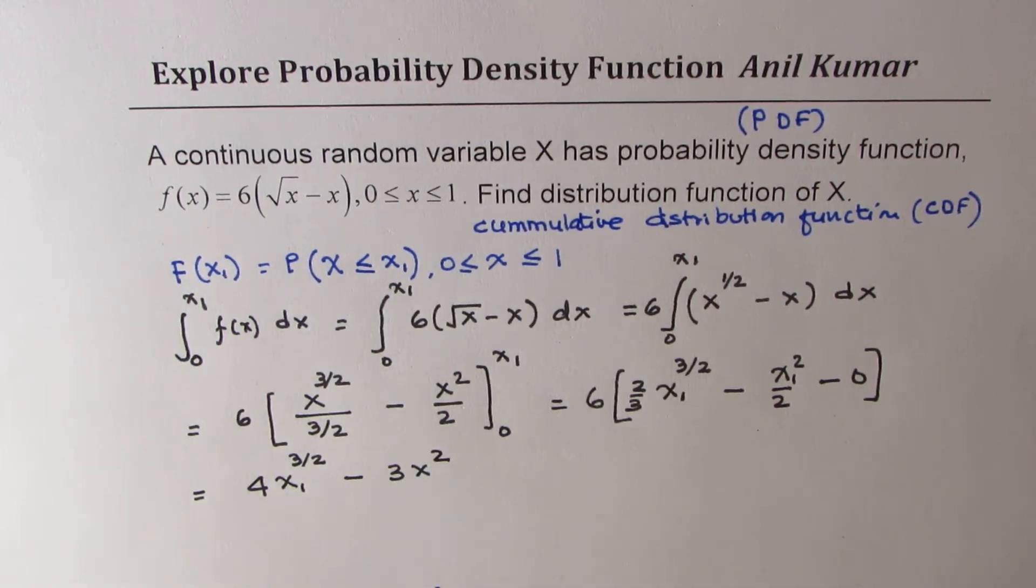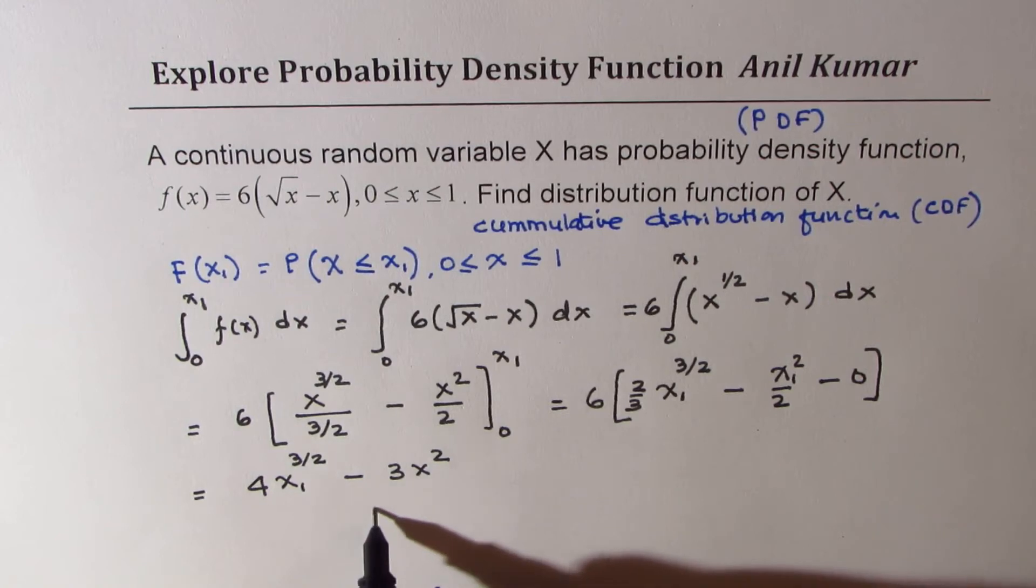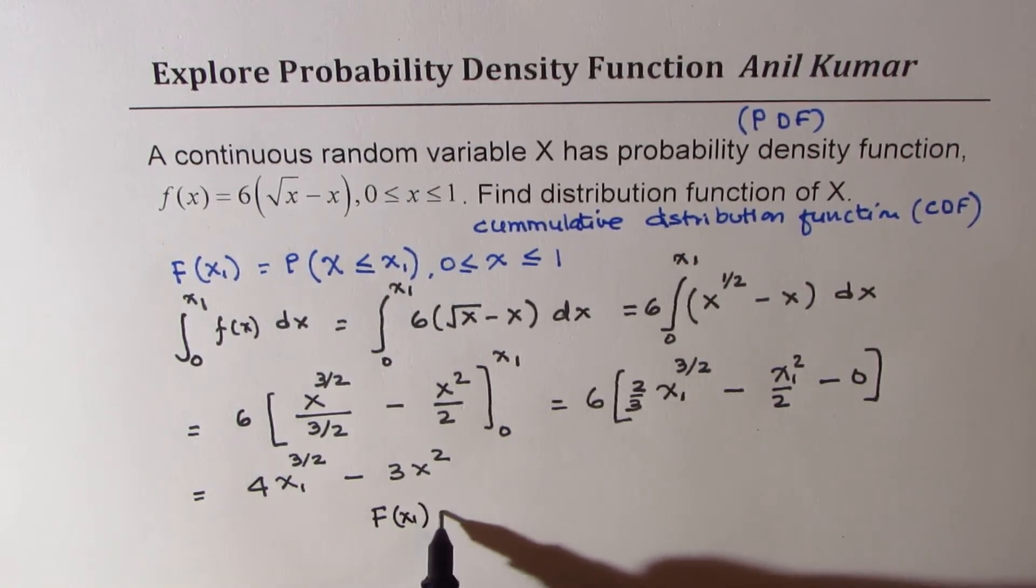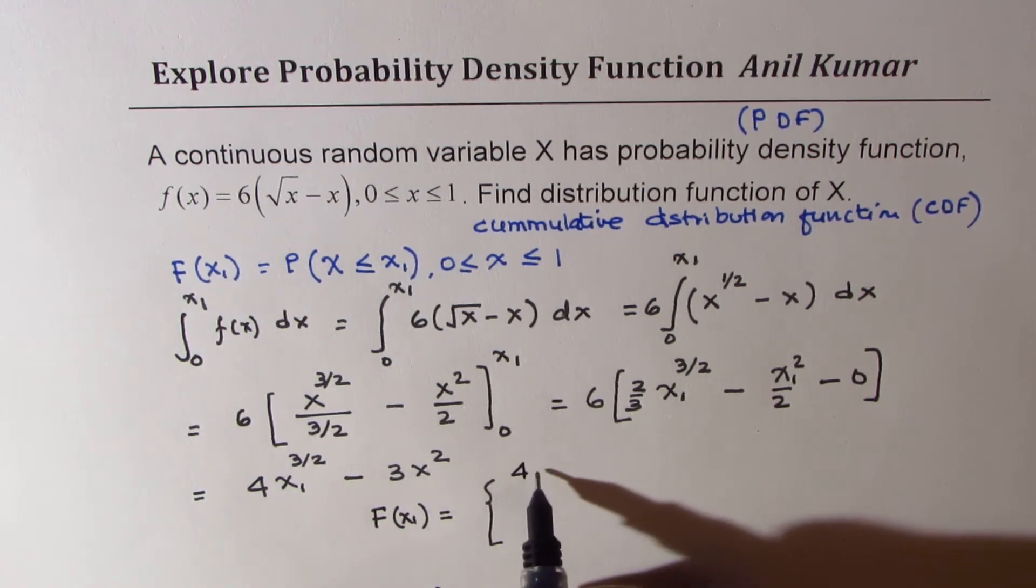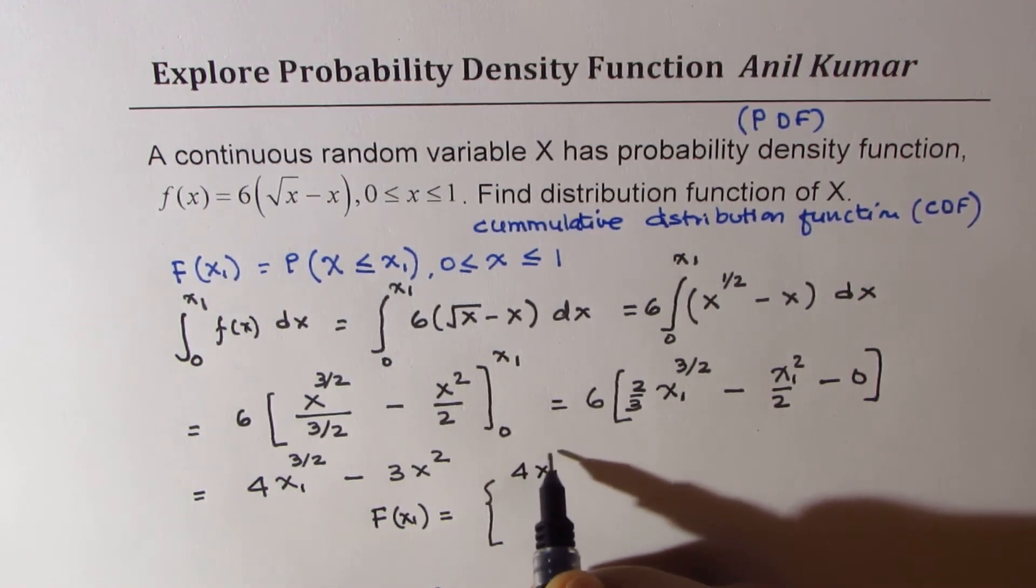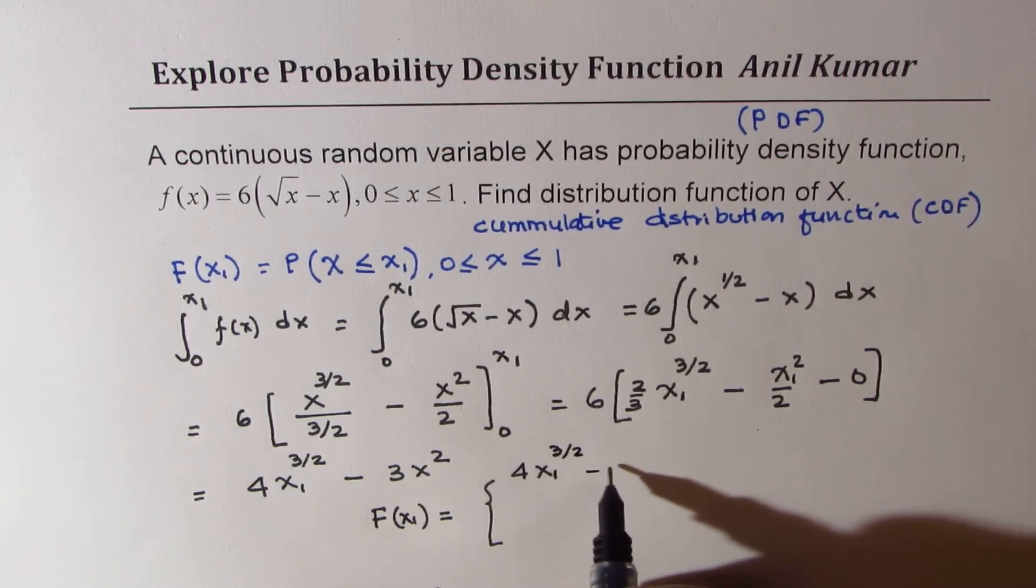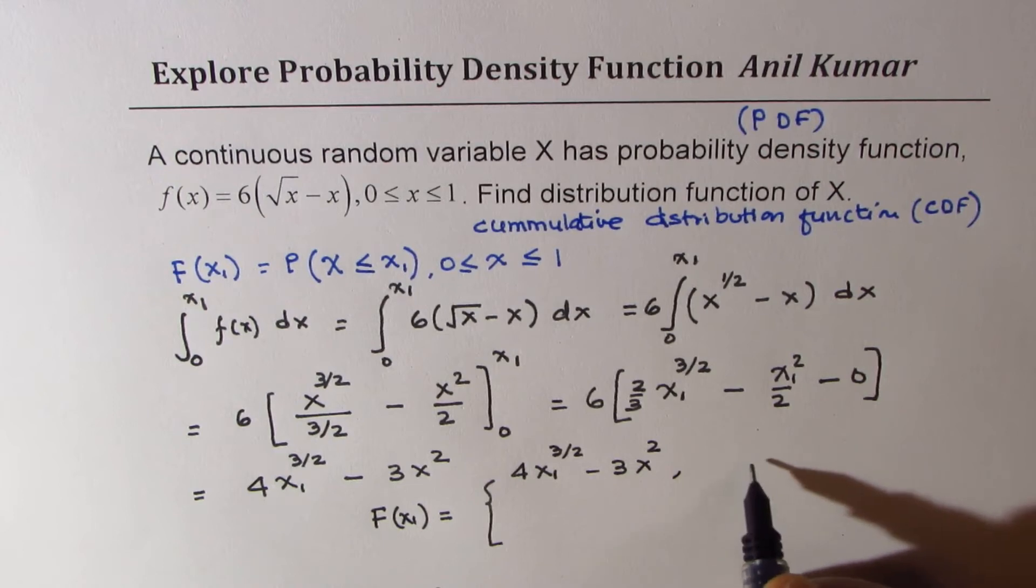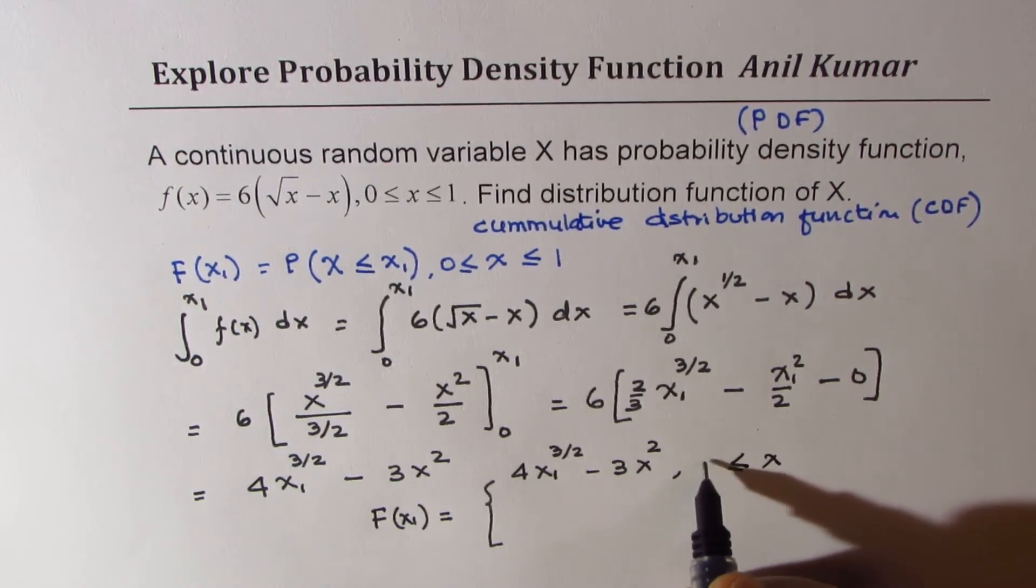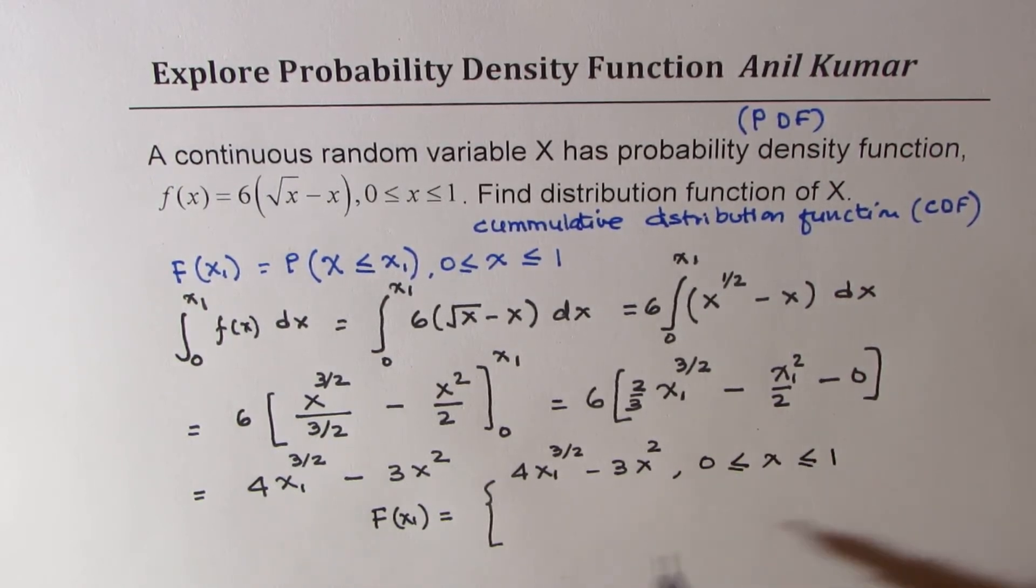So that becomes the distribution function. You can now write the answer as F(x1) equals 4 x1 to the power of 3 by 2, minus 3 x squared, for x to be within 0 to 1. And elsewhere, it is equal to 0.